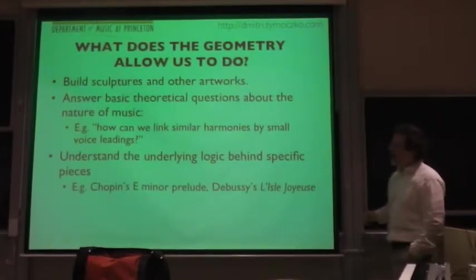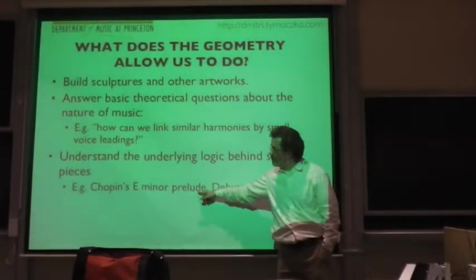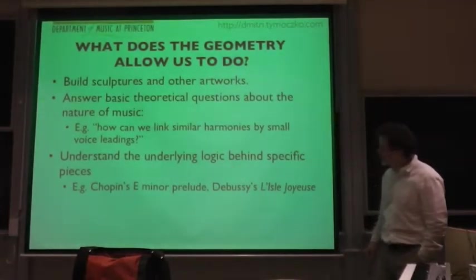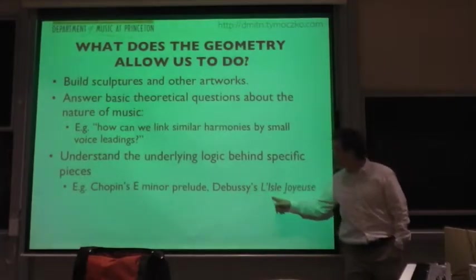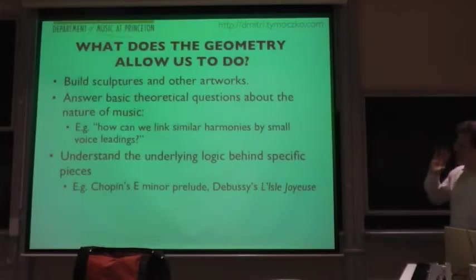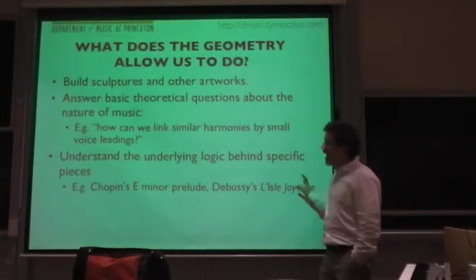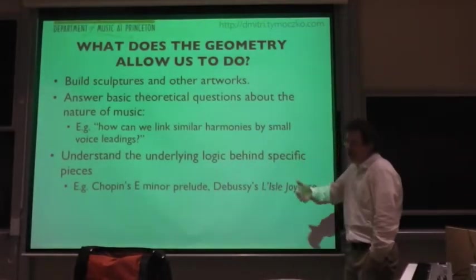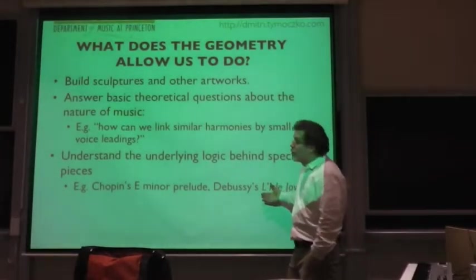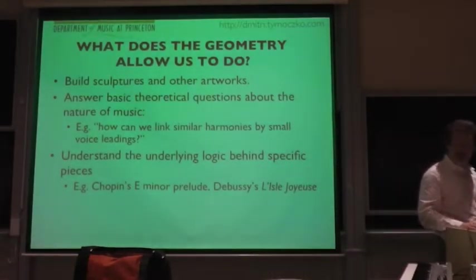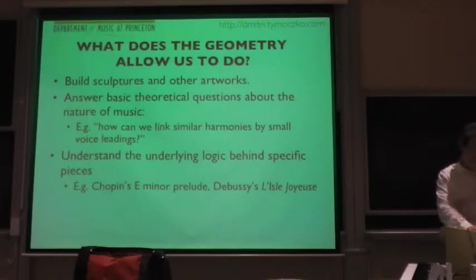In my book, I give analyses of the very famous Chopin E minor Prelude, which turns out to move very systematically through a lattice of four-dimensional cubes. And Debussy's L'Isle Joyeuse, which engages in very similar kind of exploration of a higher dimensional space of scales. I should say that for me, there's a one-note chord, two-note chords, three-note chords. Seven-note chords are what we typically think of as musical scales, but I just think of them as higher dimensional chords.